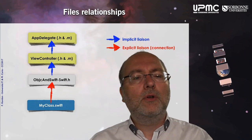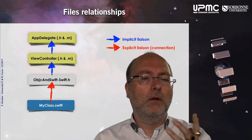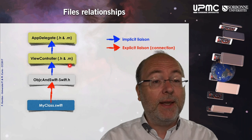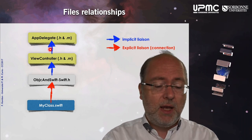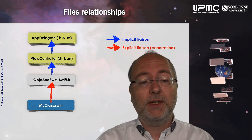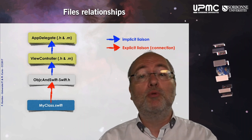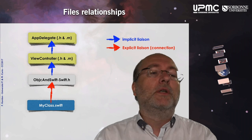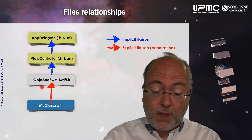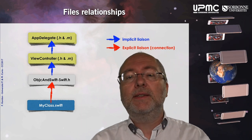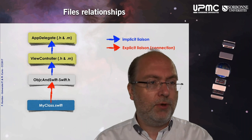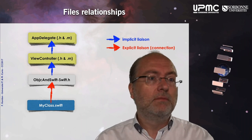Let's have a look at the structure of the system. Here you have the AppDelegate files (.h and .m) and the ViewController files (.h and .m) — you are in the world of the Objective-C project. Here you are in the Swift world, represented by the only class: MyClass. And you have this file — it's strange because this file is not visible in the project, but it's there.